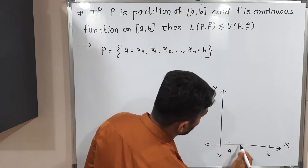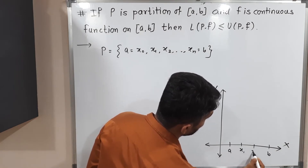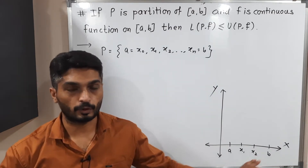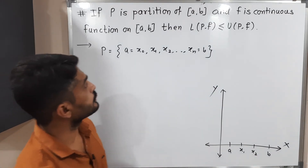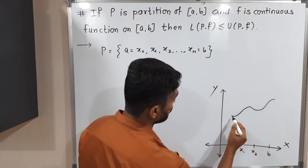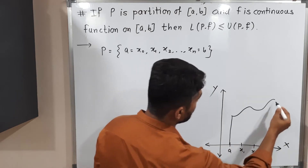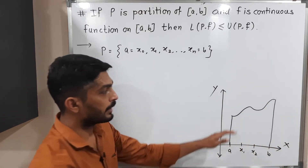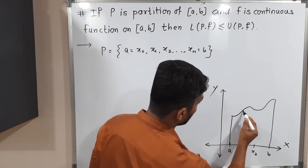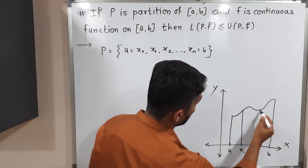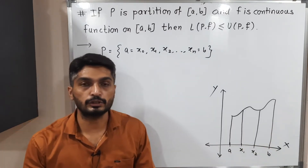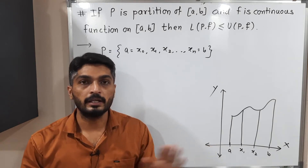I will show it here on the diagram. So, this is x0, this is x1, this one is x2 — I have considered only three partitions here. Now, f is a continuous function on the closed interval [a, b], so let me draw a continuous function. Because of this partition, the region bounded by the curve and the x-axis will be divided into n number of parts.